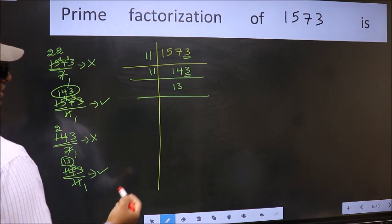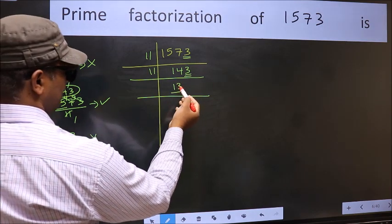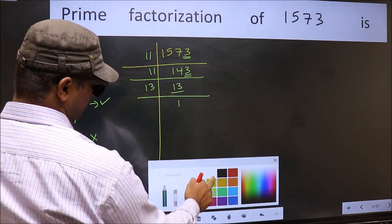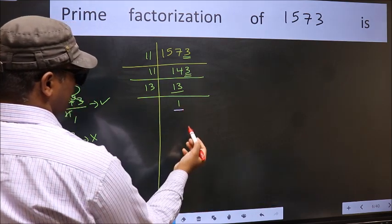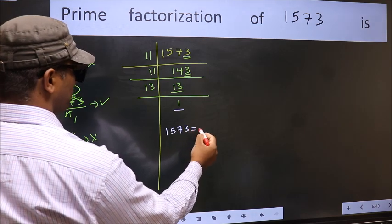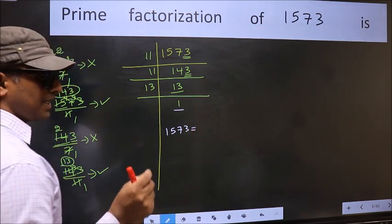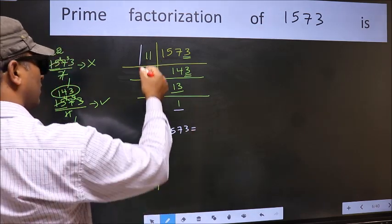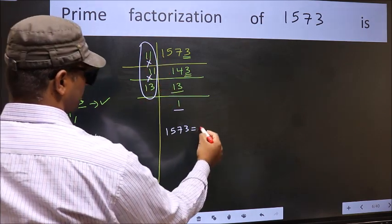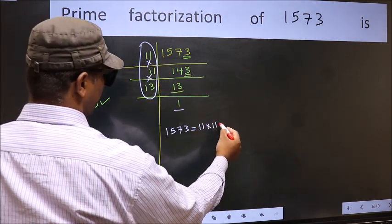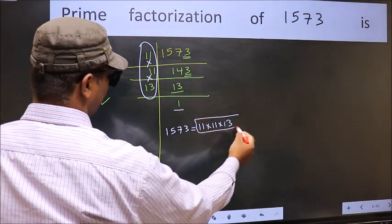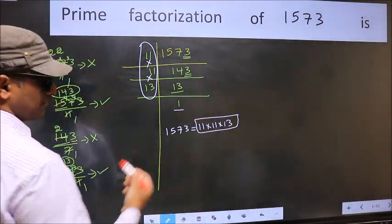Now we have 13. 13 is a prime number, so 13 once is 13, and we get 1 here. Therefore, the prime factorization of 1573 is the product of these numbers: 11 into 11 into 13.